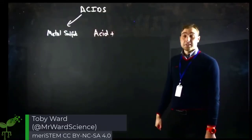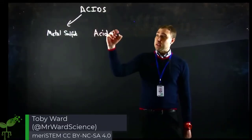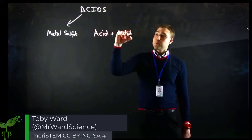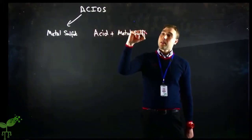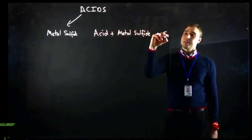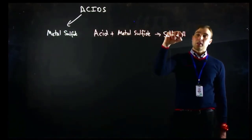Now we're going to look at the reaction between acids and metal sulphides. The general formula is acid plus metal sulphide goes to salt and hydrogen sulphide.